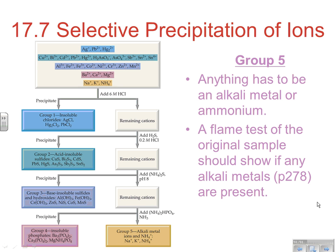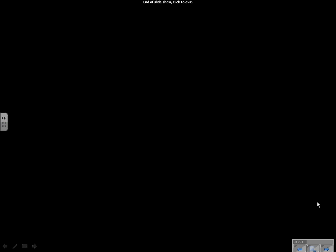You could use something like a flame test to differentiate between those. The flame tests from different alkali metals are shown on page 278. We can basically dip a wire loop into the solution, pick up a little bit of solution on the wire, put it inside a flame, and see what color it burns. We can use that to identify whether we have sodium, potassium, or potentially ammonium. So a flame test would tell us basically which group 5 ion we had. And that ends our notes over Chapter 17.